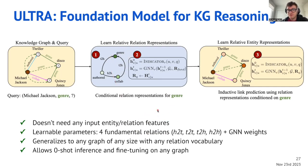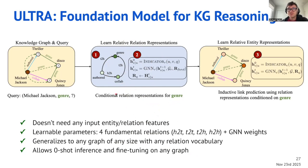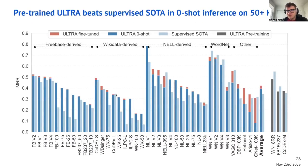This algorithm generalizes to graphs of any size and relational vocabulary — wherever you have more than two edge types, it will work. It allows zero-shot inference and fine-tuning on any graph. Because we train the model to capture those topological interactions, you can apply it out of the box to any graph and expect non-trivial results — and indeed we see quite non-trivial results, actually state-of-the-art results.